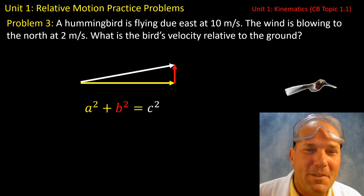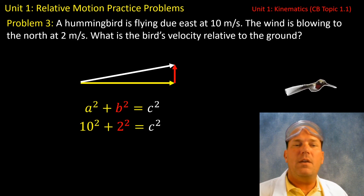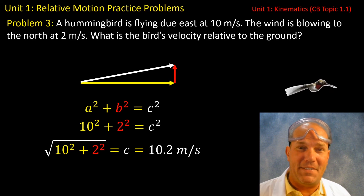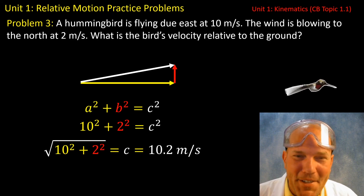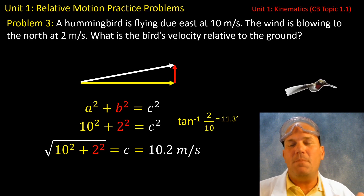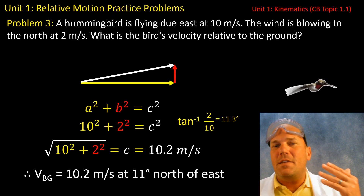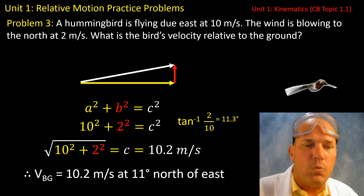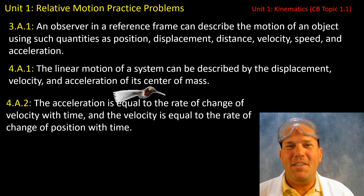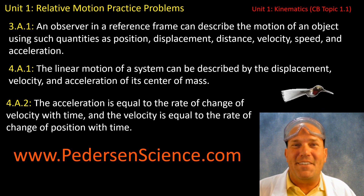It's Pythagorean theorem time: A squared plus B squared equals C squared. Putting in our values and taking the square root, we solve for the magnitude of the hummingbird's velocity. Vectors have both magnitude and direction, so we use an inverse trig function to find the angle at about 11.3 degrees. Using cardinal directions, the final answer is that the velocity of the bird with respect to the ground is 10.2 meters per second at 11 degrees north of east. That sums up the frame of reference videos — we've covered this in great detail.